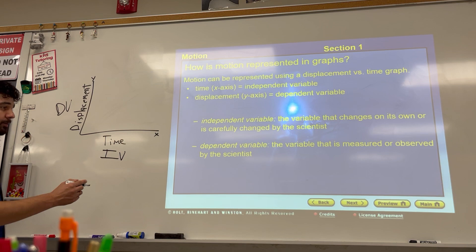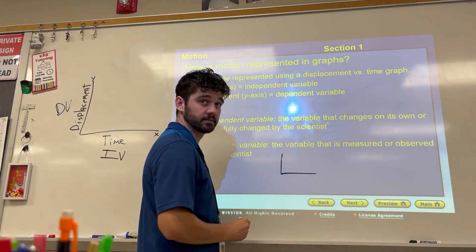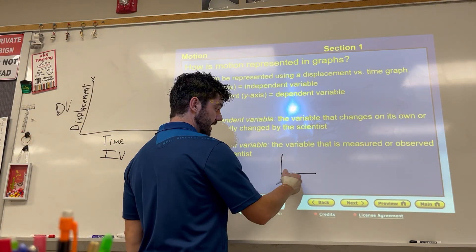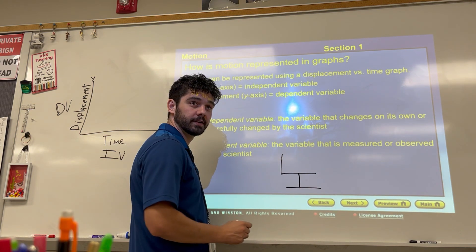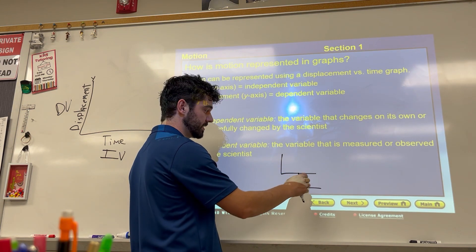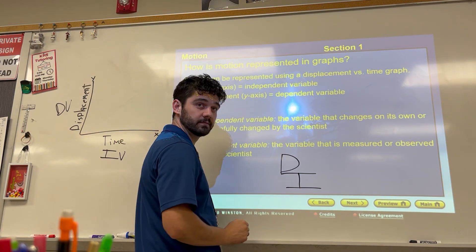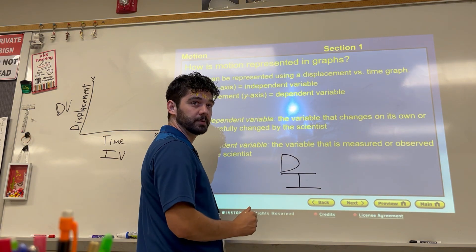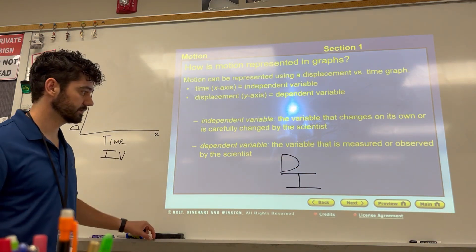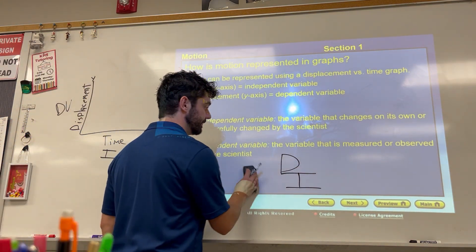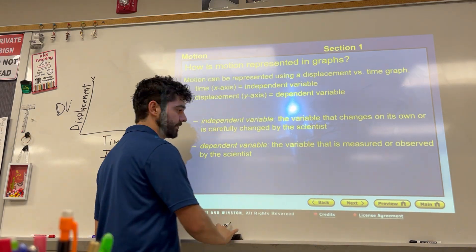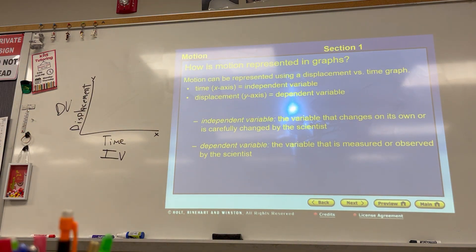A fun way you can remember which one goes where: if I have my graph with the x-axis, I can make a letter I for independent variable — it goes on the x-axis. On the y-axis I can make the letter D, which helps me remember that the dependent variable goes on the y-axis. So the independent variable is the thing that changes on its own or is changed by the scientist. The dependent variable is the thing we are measuring or observing, which in this case is time and displacement.